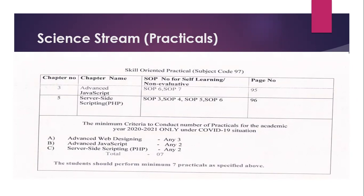On page number 96, for chapter 5, Server-Side Scripting PHP: SOP 3 — display elements of an array, display the size of an array, and delete an element from the array — is removed. SOP 4 — write a PHP program to save the marks of English and Marathi — is also removed. SOP 5 — save marks of given subjects — is removed. SOP 6 — calculate the electricity bill — is also removed from page number 96, chapter 5, for science stream this year.